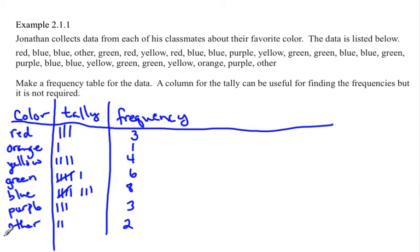It's a good idea to make one last row here called the total row, just to make sure that we actually did get the right number. So when you add these up, three plus one is four, plus four is eight, plus six is 14, plus eight is 22, plus three is 25, plus two is 27. And then it's a good idea to just count, make sure you've got them all.